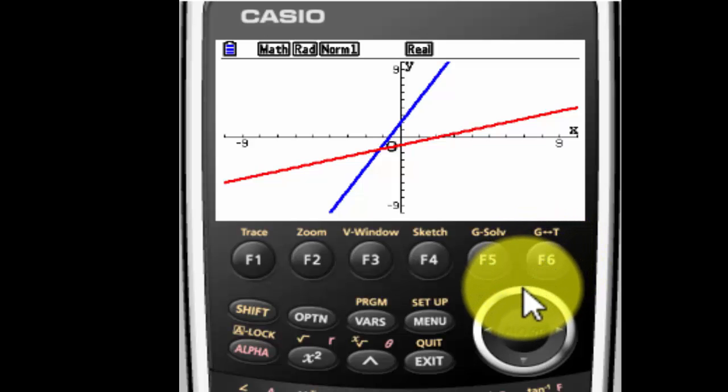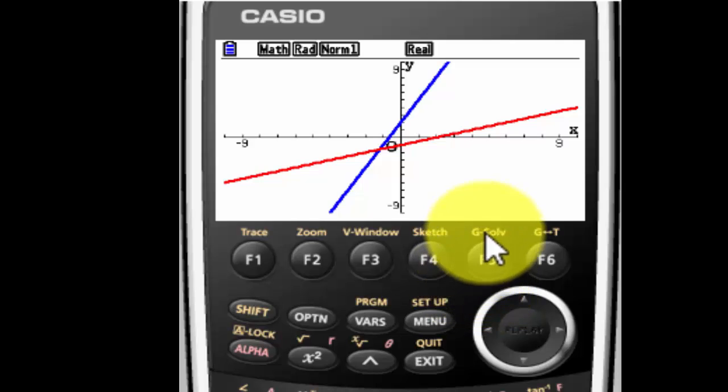But what I want to do is I want to know exactly what that point is. Well, right above the F5 in that yellowy brown is the word G-solve.